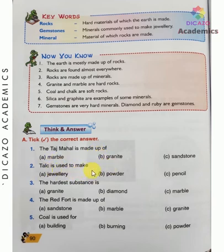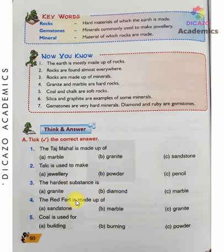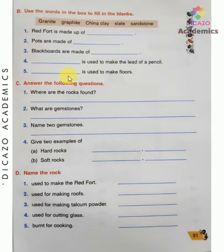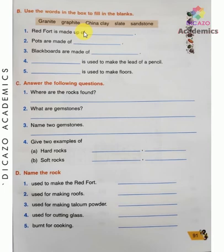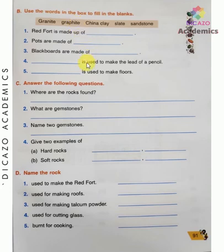Tick the correct answer: Talc is used to make talcum powder. The hardest substance is diamond. The Red Fort is made up of sandstone. Coal is used for burning. Now fill in the blanks: The Red Fort is made up of sandstone. Pots are made of china clay. Blackboard is made of slate. Graphite is used to make the lead of a pencil. Granite is used to make floors.